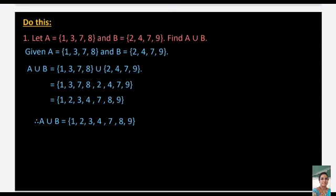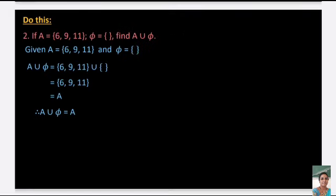Second problem: A = {6, 9, 11} and φ = null set. Find A ∪ φ. Since the null set has no elements, A ∪ φ = A = {6, 9, 11}. The union of any set with the null set is the set itself.